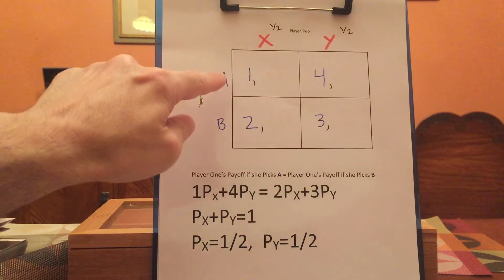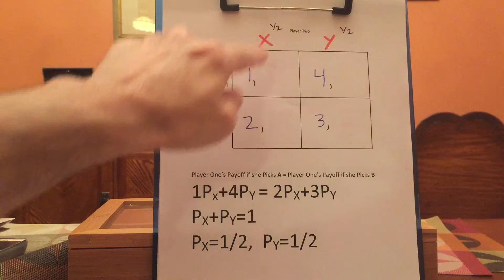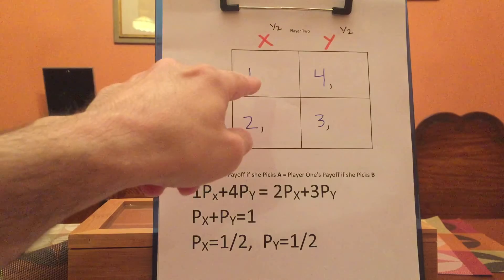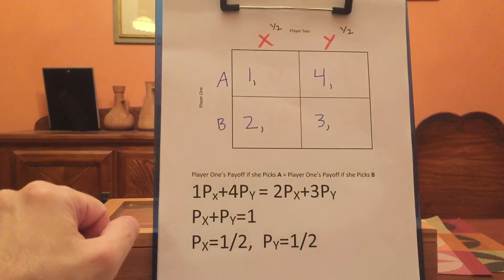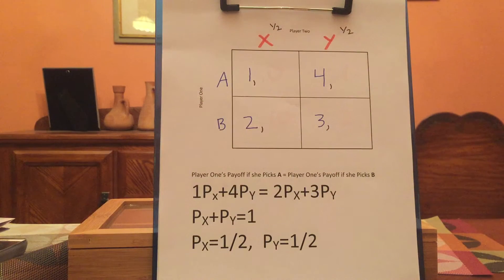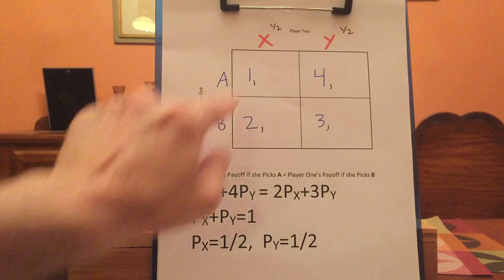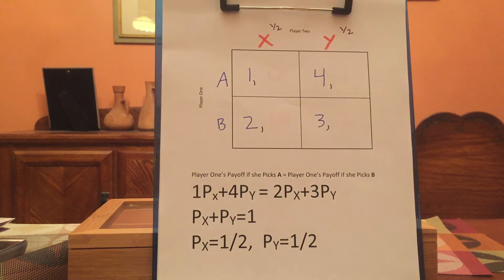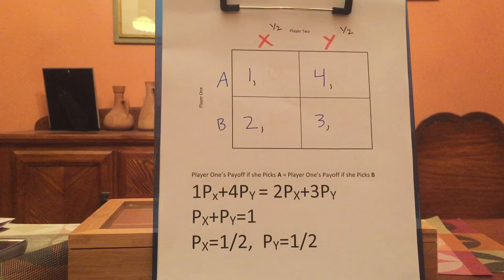Let's quickly verify that is the right answer. Given these probabilities, if player one picks A, she gets one half the time and four half the time — on average she gets two and a half. She plays B, she gets two half the time and three half the time — again, on average she gets two and a half. So player one with these probabilities is willing to mix between A and B. Generally in mixed strategy games, it's easier to verify if your answer is right than it is to determine the right answer.